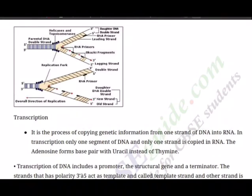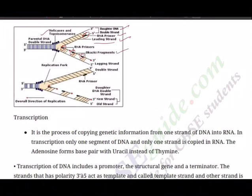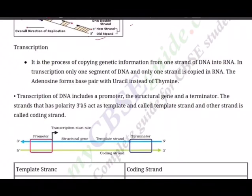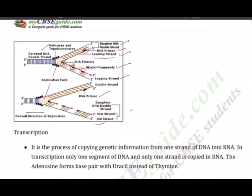In the diagram showing Okazaki fragments, the parental DNA double strand is unwound by helicase and topoisomerases. The daughter DNA double strand grows 5' to 3', with an RNA primer on the leading strand forming a continuous strand. On the lagging strand, Fragment 1 and Fragment 2 are visible — these are Okazaki fragments forming the lagging strand. Once the replication fork is formed, the new strand is synthesized 3' to 5' on the template. In our next class, we will talk about the important concept of transcription. Until then, keep practicing and post your doubts.